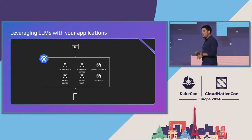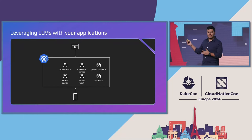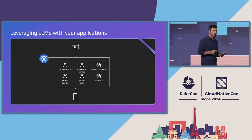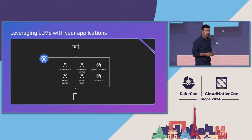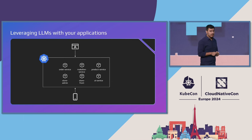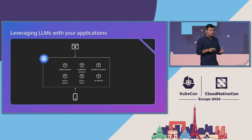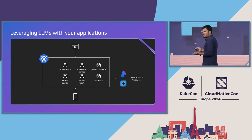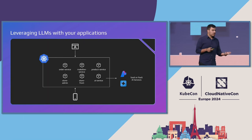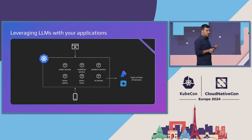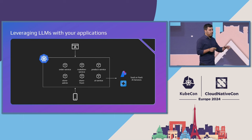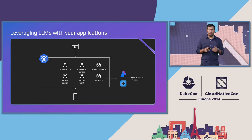Today, your applications might look a little bit like this — maybe a bit more microservices, maybe a little more monolithic, hopefully in Kubernetes. And truly the easiest way to get started is leveraging a SaaS service like OpenAI, which allows you to get started super quickly, prototype, go fine-tune, and go all the way to production.